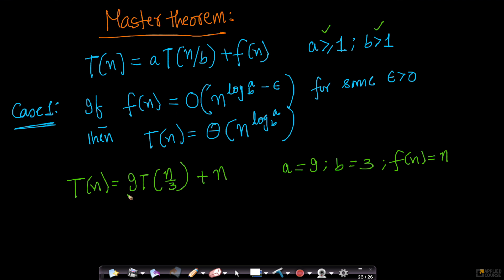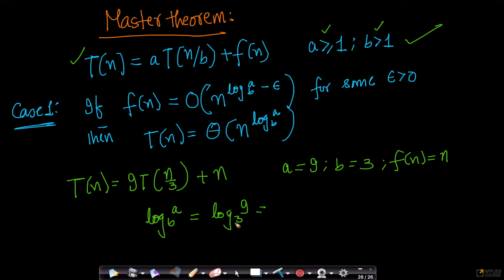Now let's check the condition. We need to compute n^(log_a base b) = n^(log_9 base 3). Since 3² = 9, log base 3 of 9 equals 2. So this becomes n^(2 − ε).